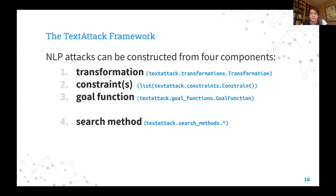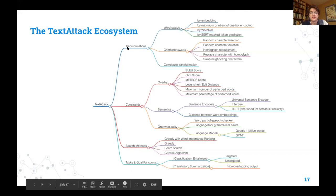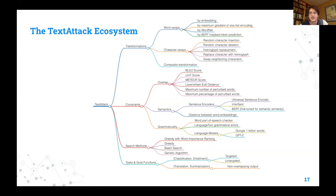These are just the classes in TextAttack. Goal functions extend the goal function class; same with constraints and transformations. We're trying to make the API as straightforward as possible so we can continue to think within this framework. This is a chart of everything in the TextAttack ecosystem. You can see the four components: transformations, constraints, search methods, and goal functions, which vary by task. We support synonym substitutions, swapping characters, and all sorts of constraints like edit distance, sentence encoder similarity, language model predictions, or grammar checking from a free grammar checker, plus different search methods and goal functions.